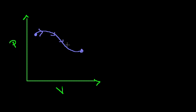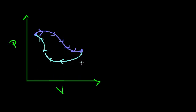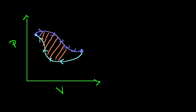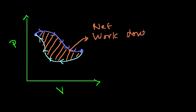I'm going from this state to that state, and we showed that if I just did this, the work done by the system is the area under this curve. And then if I were to move back to the previous state by some random path, the work done to the system would be the area under this light blue curve. So the net work done by the system ended up being the area inside of this path, when I go in this clockwise direction.